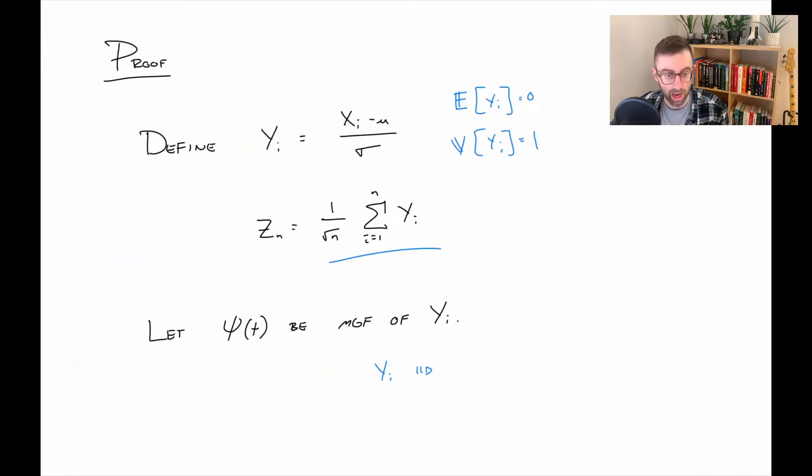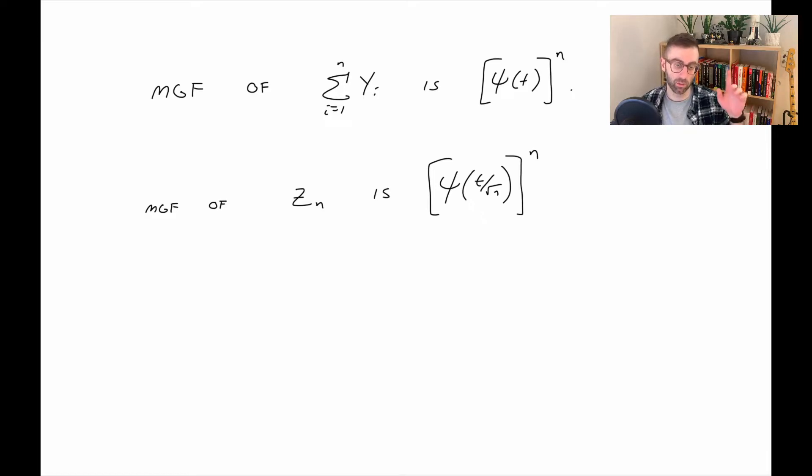Now z sub n is just one over square root of n times sum of yi's. So that would be like doing a times x plus b, where b is zero and a is one over square root of n. So we can easily get the moment generating function of z sub n, which is what we see here. I'm going to give this a new name, a squiggle sub n of t, the moment generating function of z sub n.